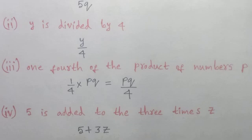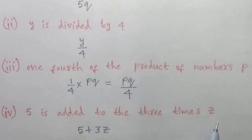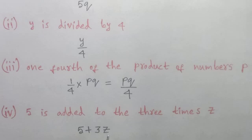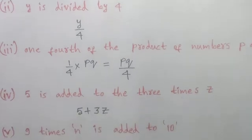Fourth statement: 5 is added to 3 times Z. First, we write 3 into Z, then we add 5 to it. So the answer is 5 plus 3Z, or otherwise 3 into Z plus 5.